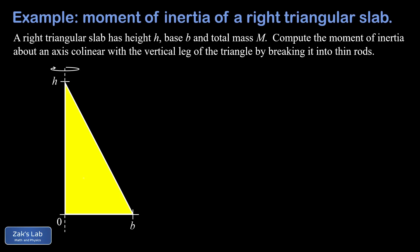In this video we're computing the moment of inertia of a right triangular slab where the rotation axis for the calculation of moment of inertia is co-linear with the vertical side of the slab as we've shown in the diagram. The slab has a height of h and a base of b and a total mass of big M.